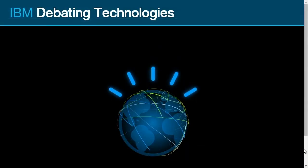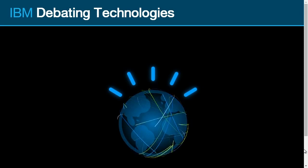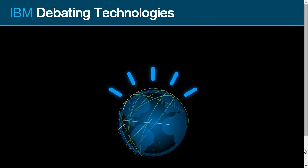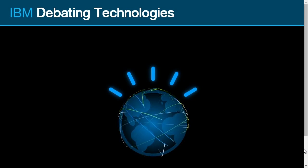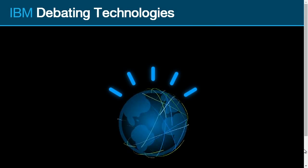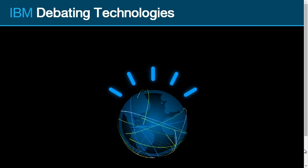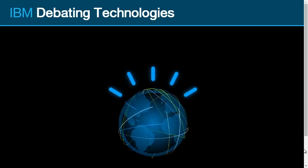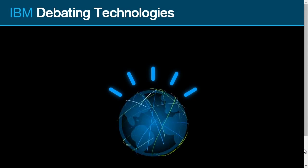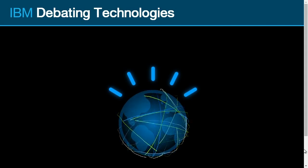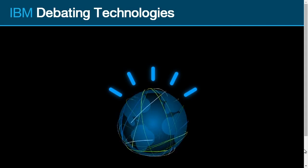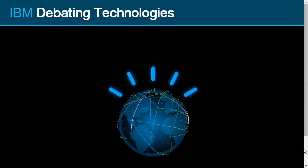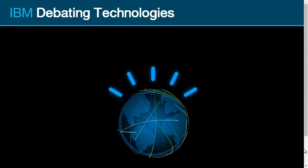One of the prototype systems that we're building is something we call the Debater. We give it a freewheeling understanding of large bodies of information like Wikipedia, and we ask the computer, with no human intervention, to construct arguments — pro and con — on any subject we throw at it. And the result of that is what I'd like to show in the demonstration now.